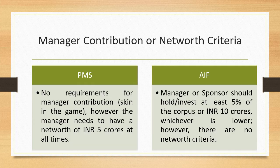Another key difference is the manager's contribution or net worth criteria. For PMS, there is no requirement for the manager's contribution — the manager does not need to have any skin in the game. However, the PMS manager needs to maintain a net worth of at least 5 crores at all times. For AIF, the manager or sponsor should hold at least 5% of the corpus or 10 crores, whichever is lower — however, there are no net worth criteria for AIF managers.